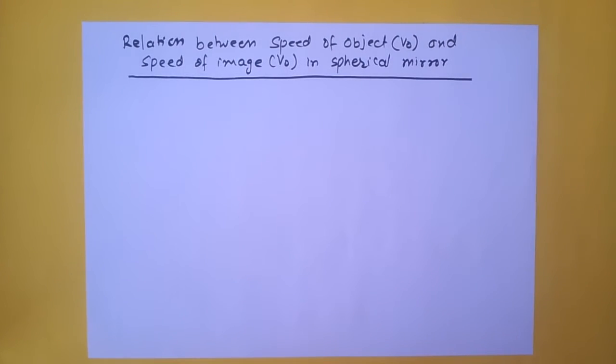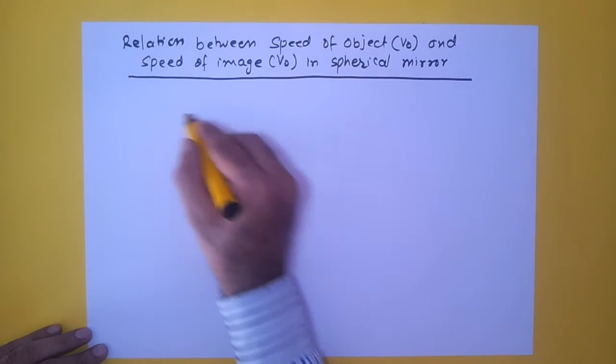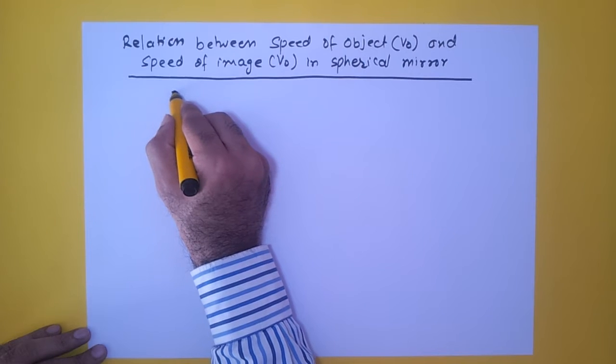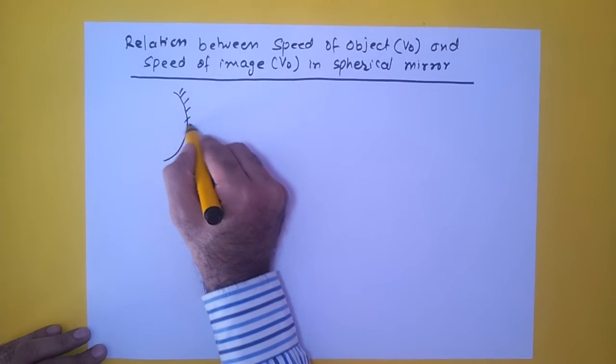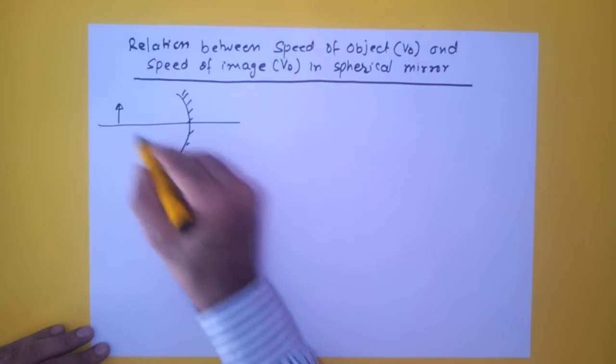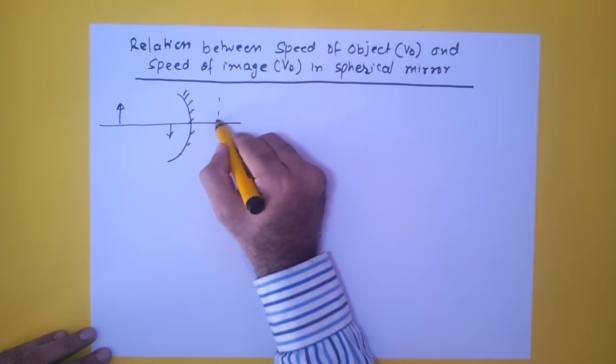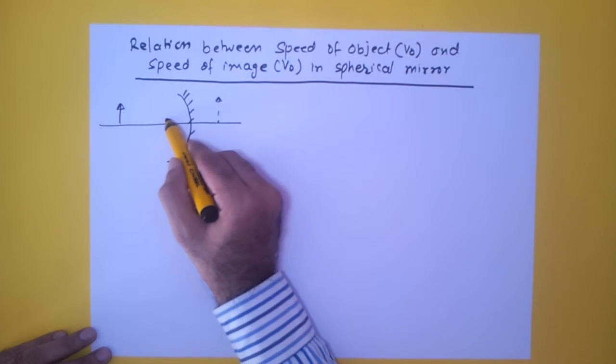One more short video on spherical mirrors: relationship between the speed of object and the speed of image. Let us say we have a concave mirror. Just to explain, this is a concave mirror and we have an object over here.